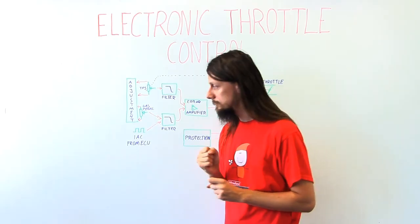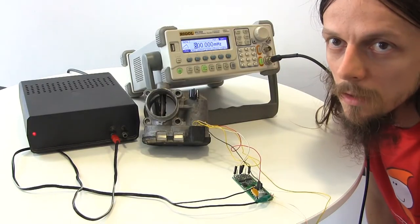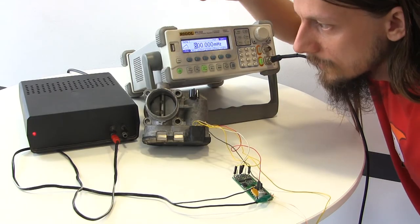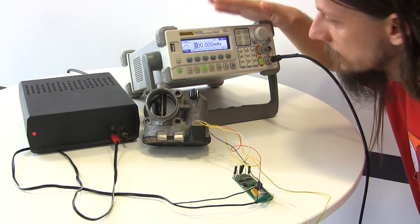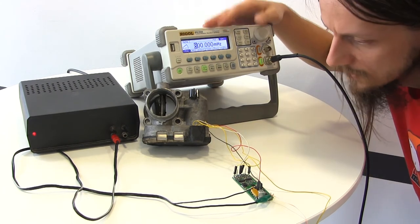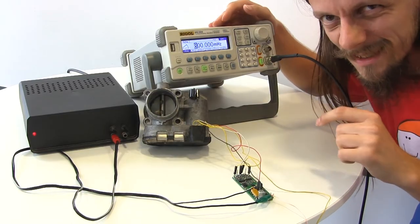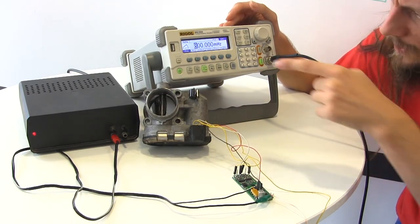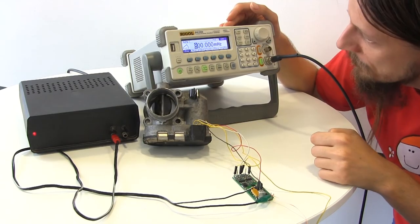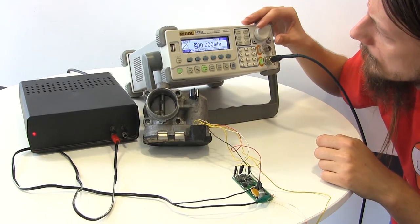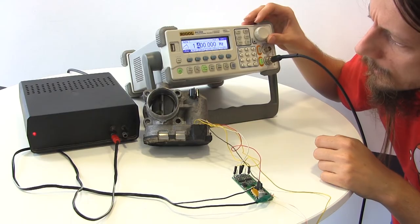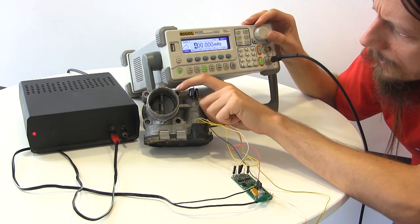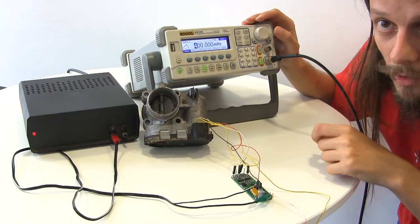Now let's see if it's in practice. So this is the circuit, my controller and here's the throttle. Now it's controlled by the signal generator that simulates the signal coming from the ECU for example. As you can see, it's working pretty nice. I know it's on 800 millihertz. Let's speed it up. It's moving. Now a bit slower. It's working quite nicely.